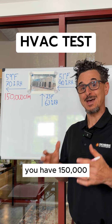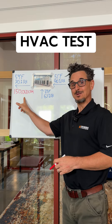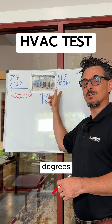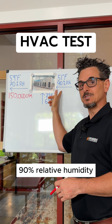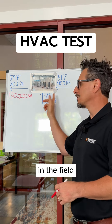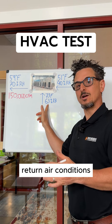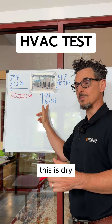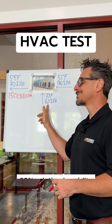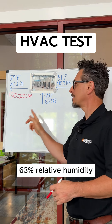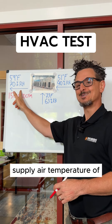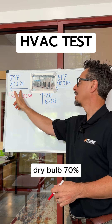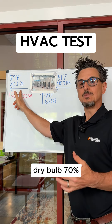You have a 150,000 CFM air handling unit. Your entering air conditions are 51 degrees dry bulb, 90% relative humidity, which you've measured in the field. You've measured your return air conditions at 73 degrees dry bulb, 63% relative humidity, and you've measured your supply air temperature of 59 degrees dry bulb, 70% RH.